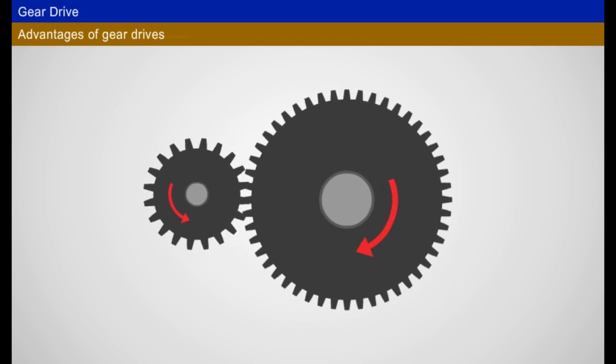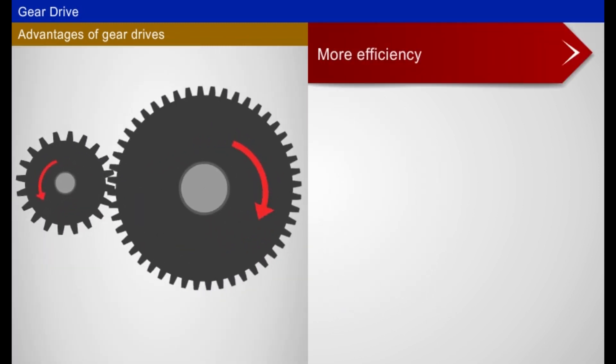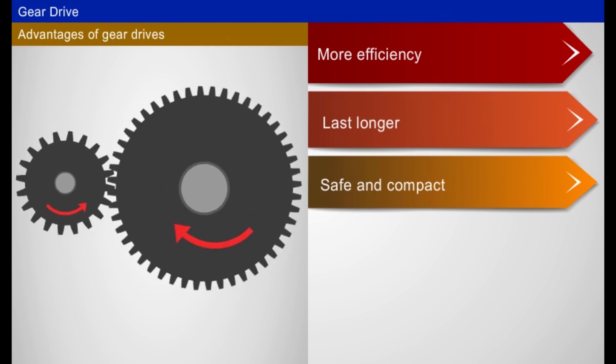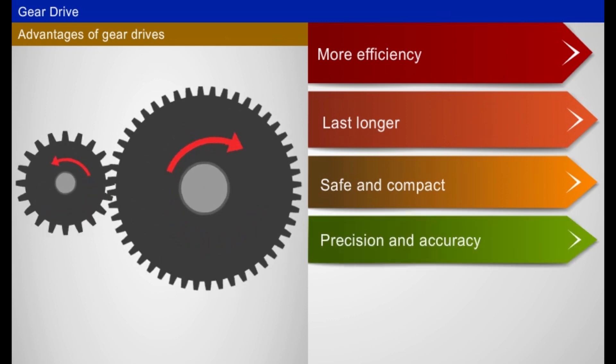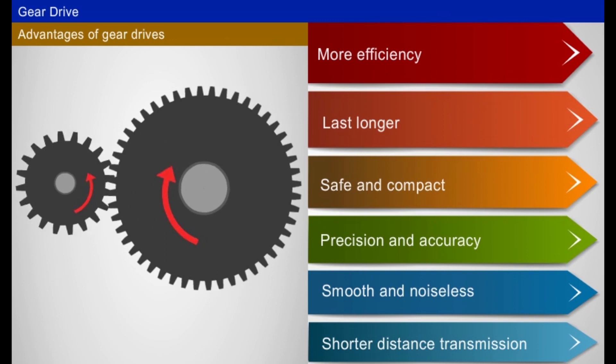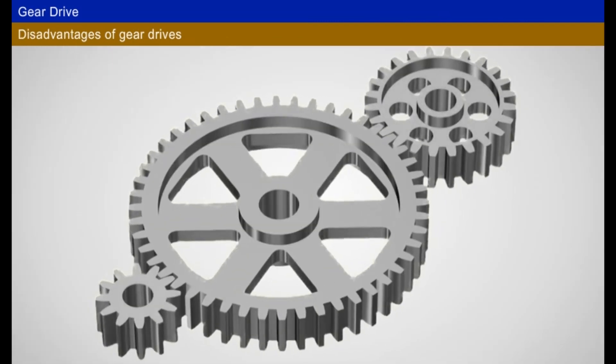The advantages of gear drives are: More efficiency than belt and rope drives, last longer, safe and compact, suitable precision and accurate speed control, smooth and noiseless operation, useful for power transmission at short distances. The disadvantages of gear drives are: Very costly to manufacture.